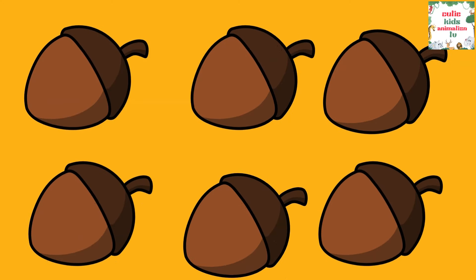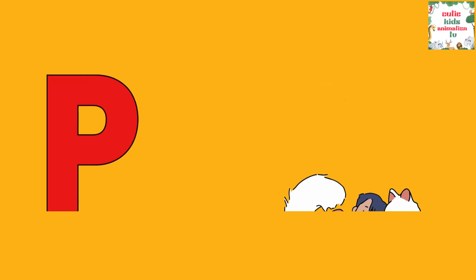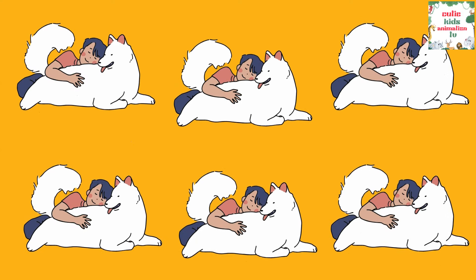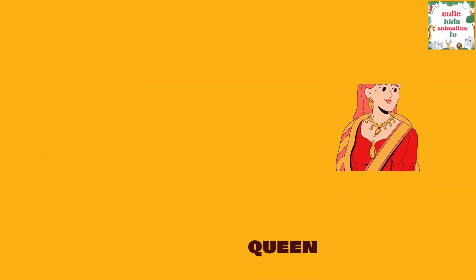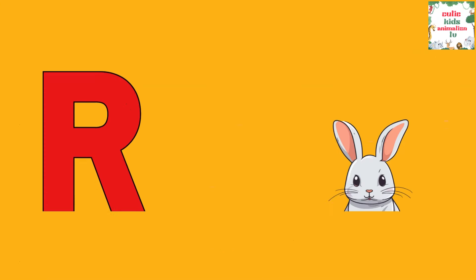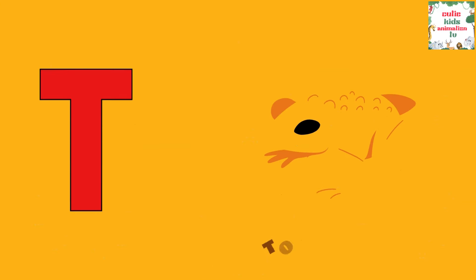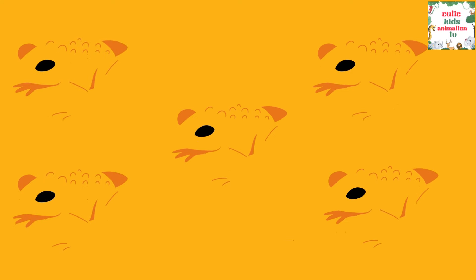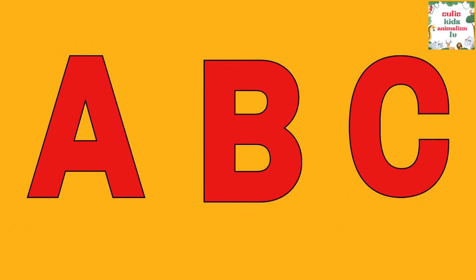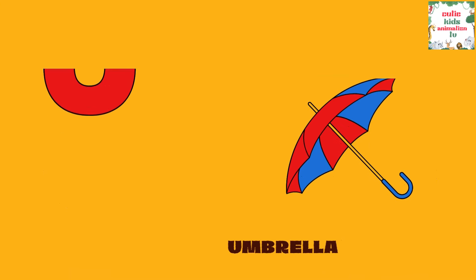M is for Mat, M-M-Mat. N is for Net, N-N-Net. O is for Orange, O-O-Orange. P is for Pet, P-P-Pet. Q is for Queen, Q-Q-Queen. R is for Rabbit, R-R-Rabbit. S is for Sun, S-S-Sun. T is for Toad, T-T-Toad.